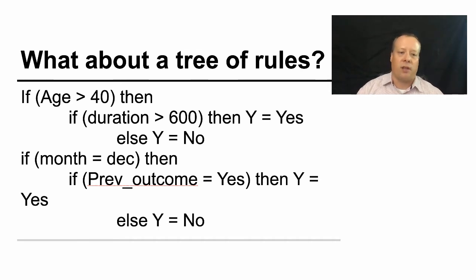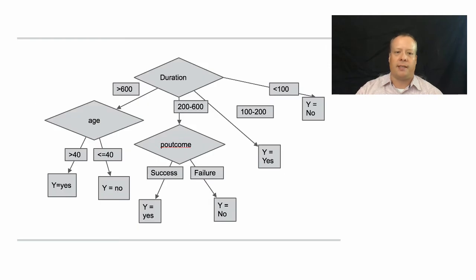Where if the age is greater than 40 and duration is greater than 600, then yes, else no. The month equals December and the previous outcome equals yes, then they were going to respond yes, else equals no. And you can start to put this together into a nice diagram that explains how all these values work.